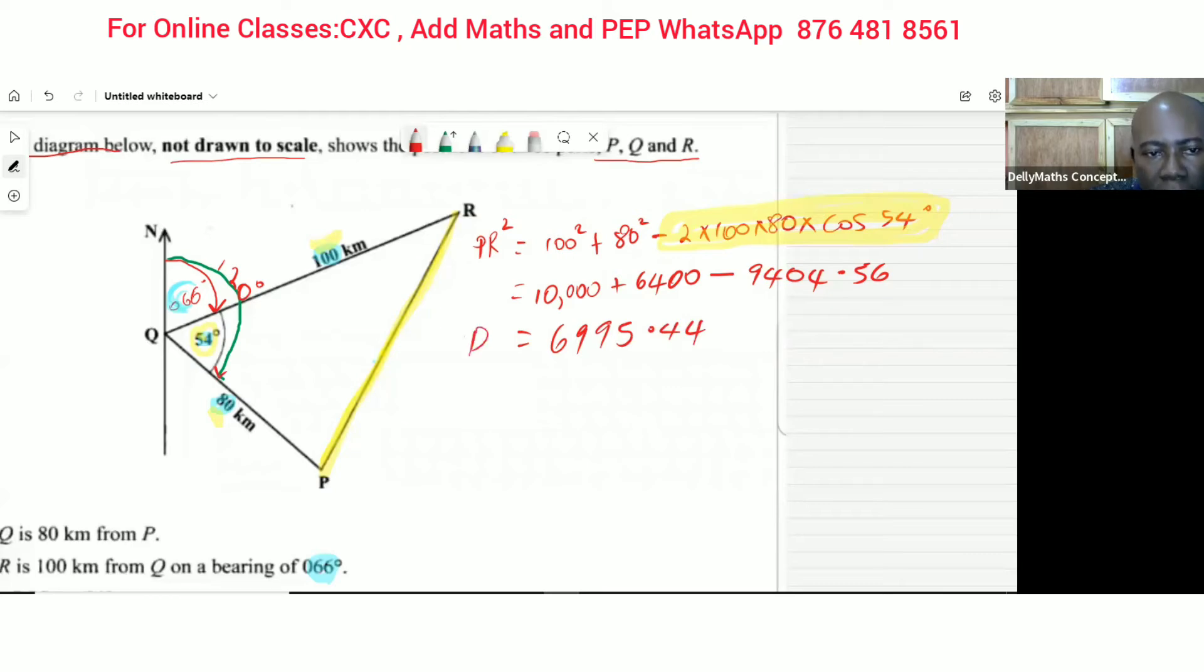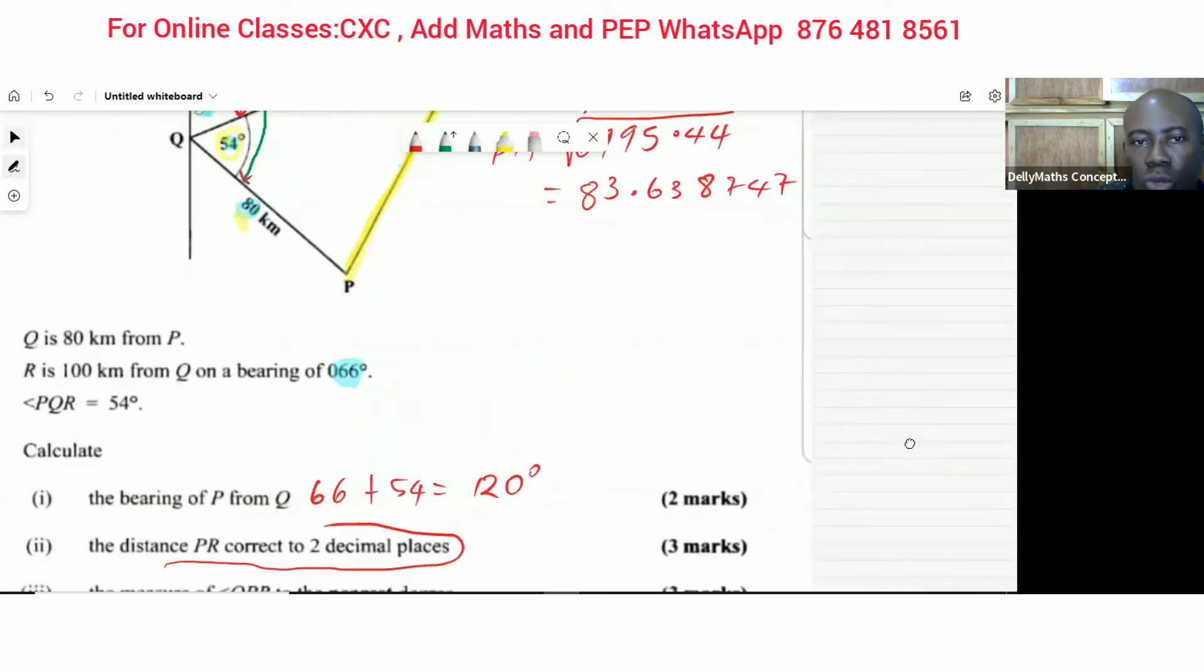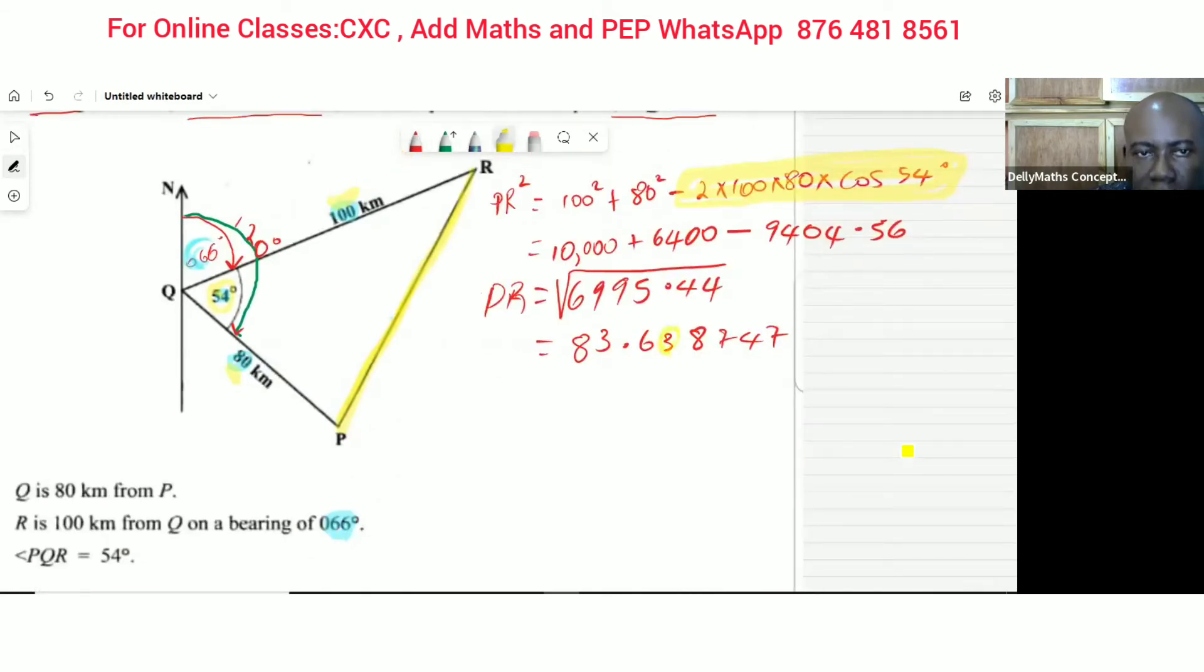So in order to find PR, definitely we have to take the square root of that. And our answer is 83.6388747. But remember the question says we need PR correct to two decimal places. In rounding off, let us identify the digit that is in this part and then we look to the immediate right - we see 8. If the number to the immediate right is in the 5 to 9 category, we increase the spot by one. So the answer is 83.64 kilometers.